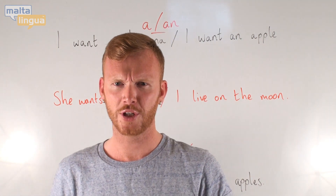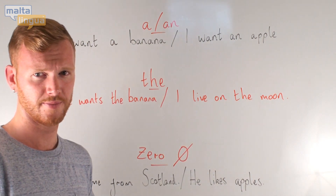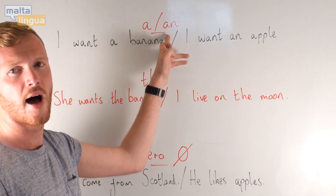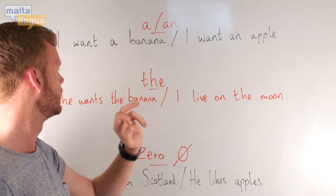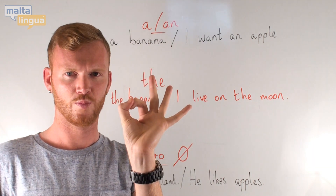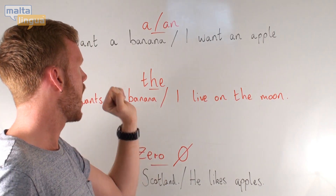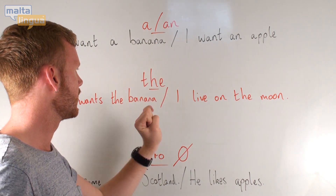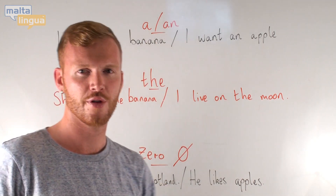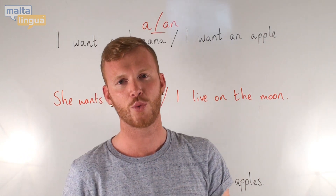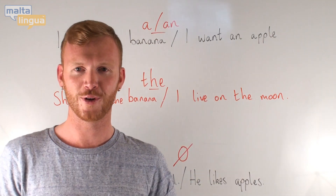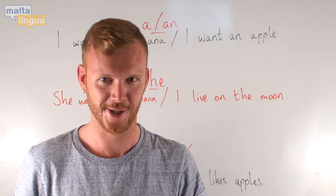Have a look behind me on the board. A, an, the, zero. These are the articles which we most commonly use and are going to look at today.